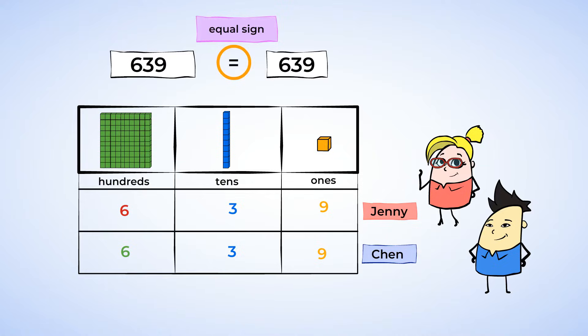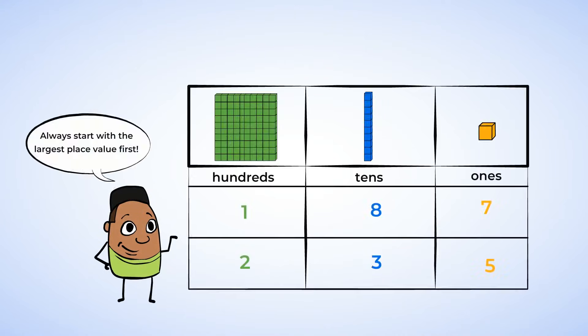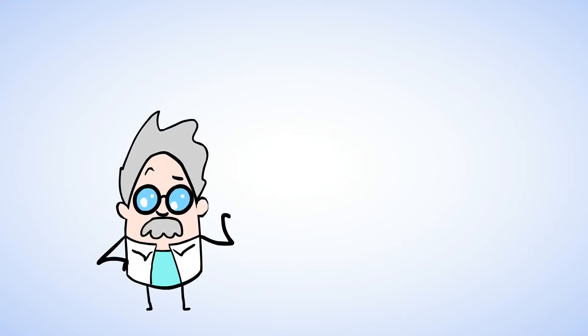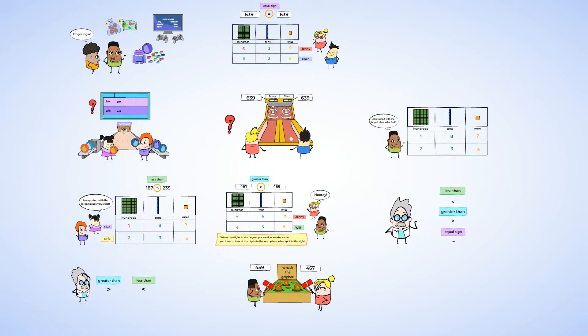Great work today! You compared numbers by first comparing the digit furthest to the left, which for us was in the hundreds place. Then if the digit was the same in the hundreds place, you compared the digit in the tens place, and then moved over to the ones place. Finally, you used the less than, greater than, and equal signs to compare the numbers. See you soon!